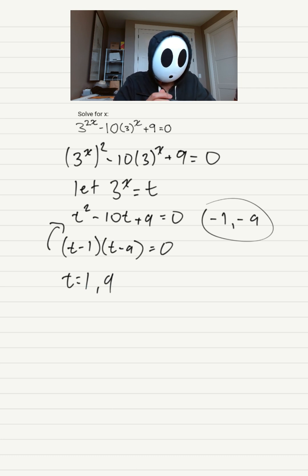We're not done yet. Now let's plug t back in for 3 to the x, which equals 1, and 3 to the power of x also equals 9. So 3 to the power of what equals 1? x must be 0 in order for 3 to the power of x to equate to 1.